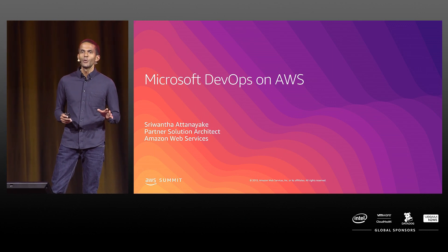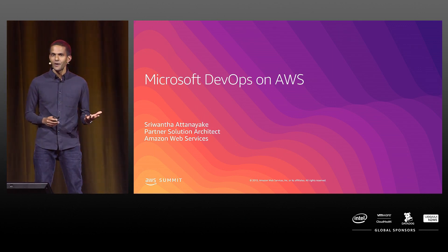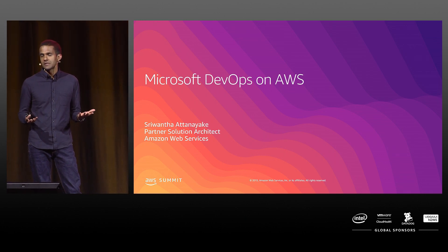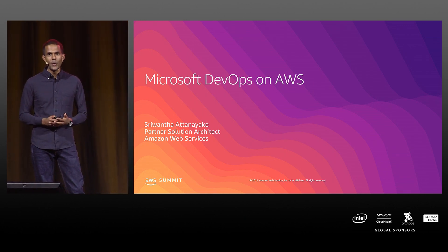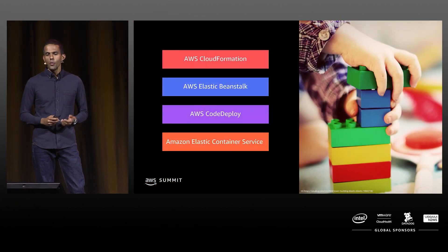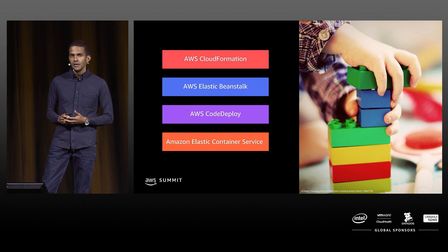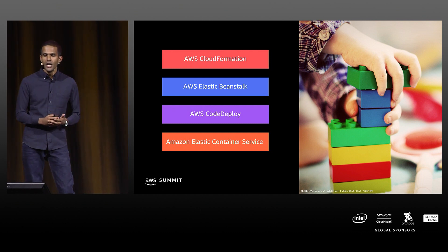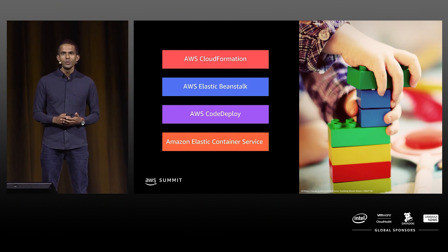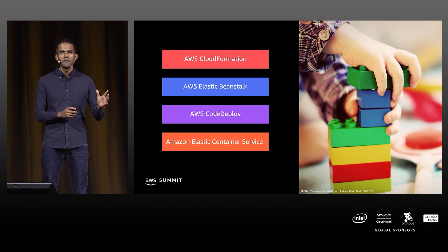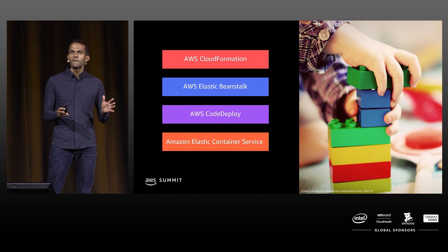In this session, we are going to learn how you can easily integrate Microsoft DevOps technologies like Team Foundation Server or Azure DevOps services with AWS. We are going to learn how to create infrastructure as code with AWS CloudFormation, deploy an ASP.NET Core web application with Elastic Beanstalk, do hybrid deployments with AWS CodeDeploy, and touch on container deployments at scale — all with the help of Azure DevOps services.